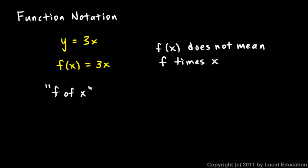So this and this mean exactly the same thing, and this is the fairly standard way to write it with function notation. Sometimes other letters besides f are used. If you're dealing with more than one function, you might be dealing with a function called f, another function called g, another function called h.